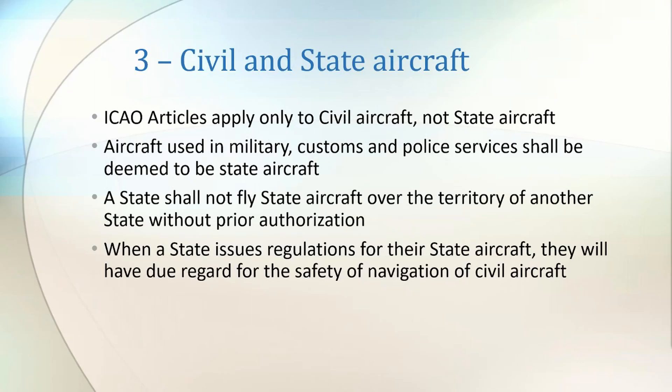Article 3 states that the ICAO articles are only applicable to civil aviation. It also defines state aircraft — a term that captures all military and emergency service aircraft. It defines that state aircraft cannot fly over the territory of other states without prior authorisation by that state. This is important as this is not required by civil aircraft. Finally, it mentions that states should consider the safety of civil aircraft navigating their airspace when regulating state aircraft, which covers things like the definition of restricted military airspace.